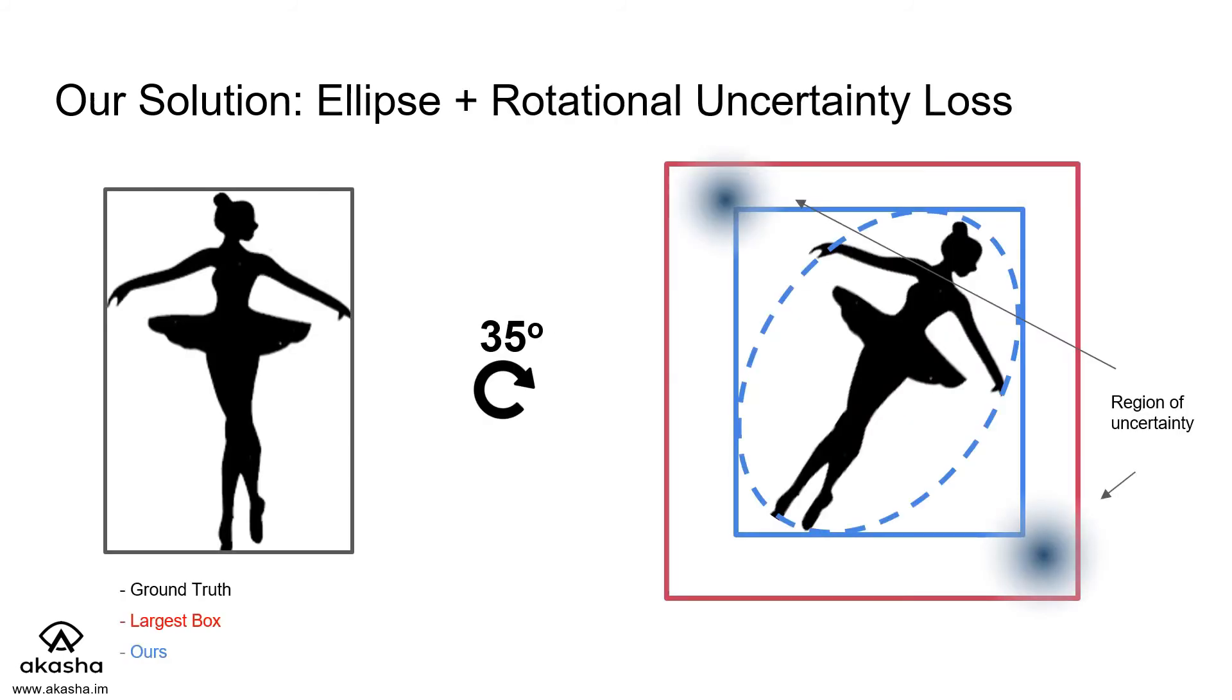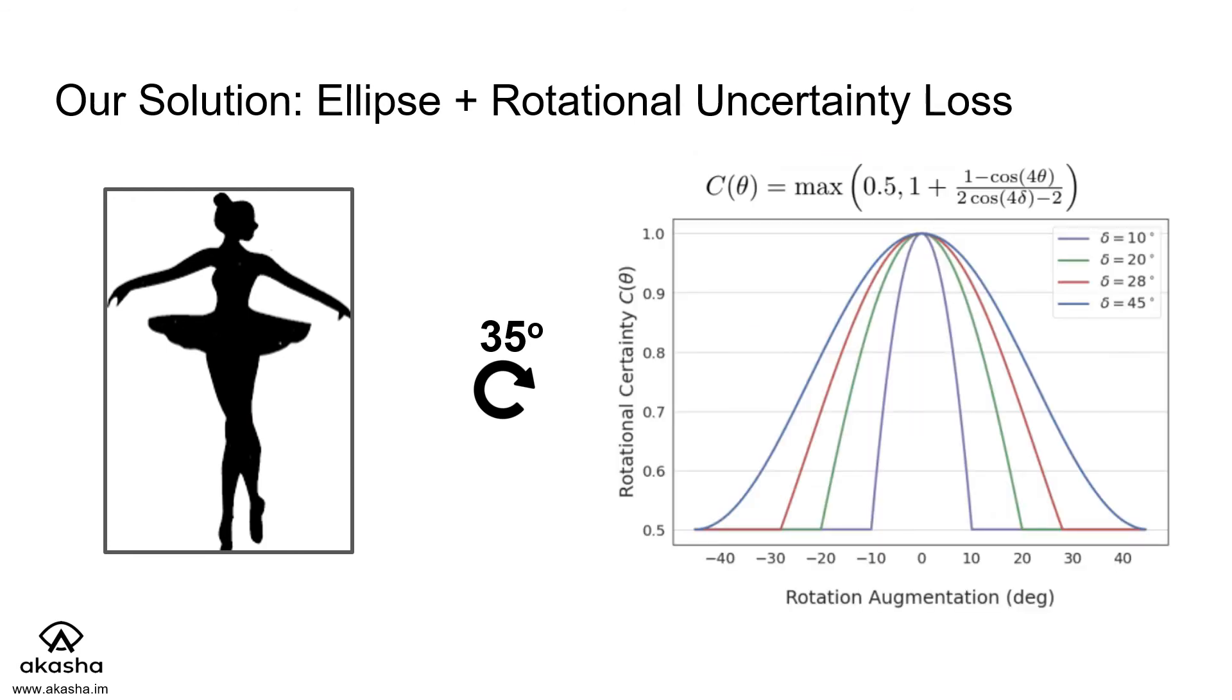To improve the model's performance even further, we introduce rotational uncertainty loss. When training on rotated labels, we are not certain that the label is 100% accurate. If the model achieves relatively high IOU with a very uncertain bounding box, we nullify the loss. Uncertainty is a function of the label rotation. At zero degrees, we are 100% certain of the label's accuracy. As we progress to higher rotations, we become less and less certain.